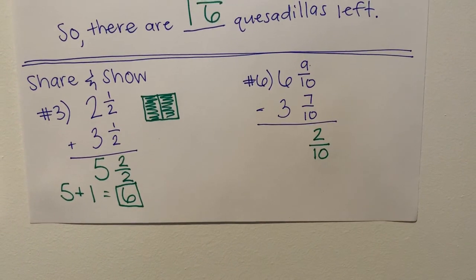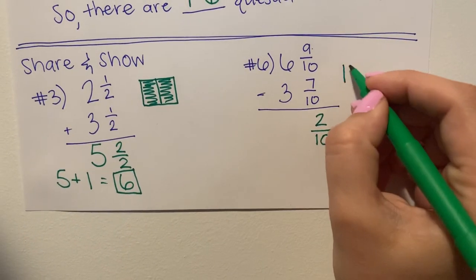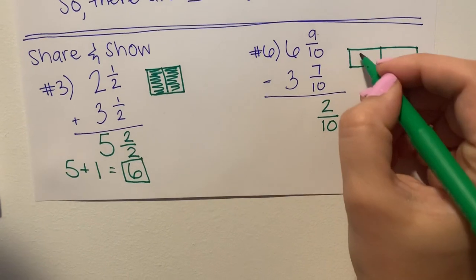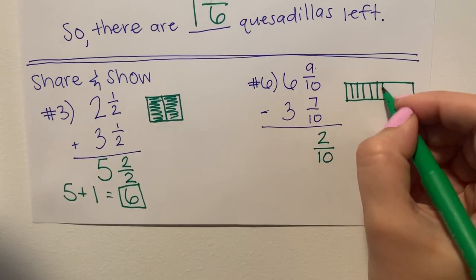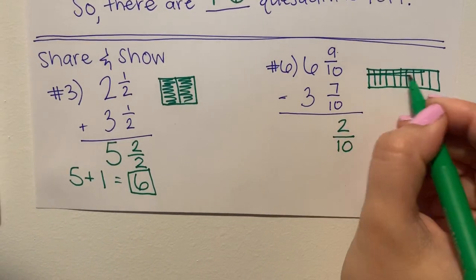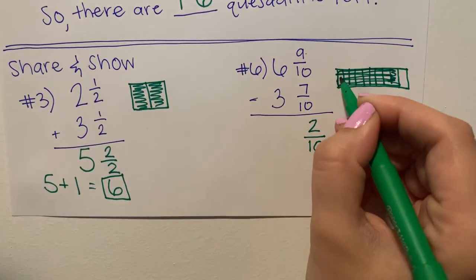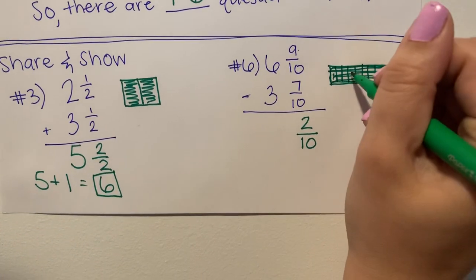You can still of course draw a model for that. So again, you can just draw one of our bar models. You can separate it into one, two, three, four, five, six, seven, eight, nine, ten equal parts, shade nine of them. Sometimes it helps if you use a different color marker.